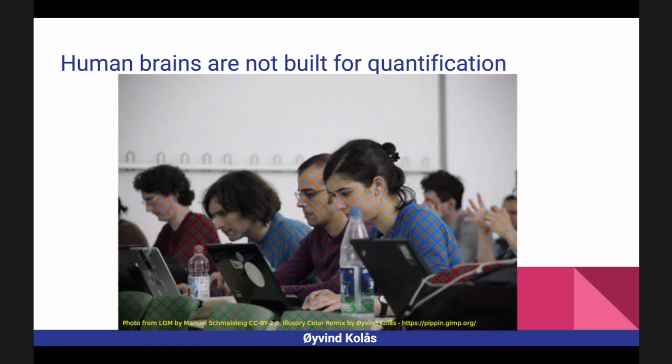I'm going to talk about two different ways of thinking about images. The first is: I know what I want to see, and I'm going to go look for it — that's how most people in my field think about image analysis. In the second half, I'll talk about more exploratory approaches, but it helps to start with what happens when you know what you want to find.